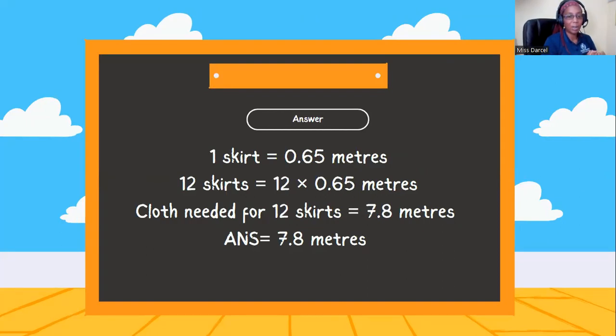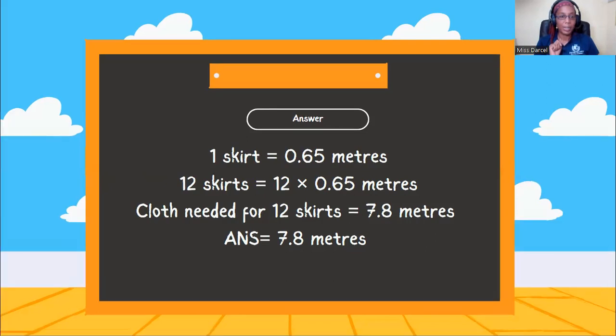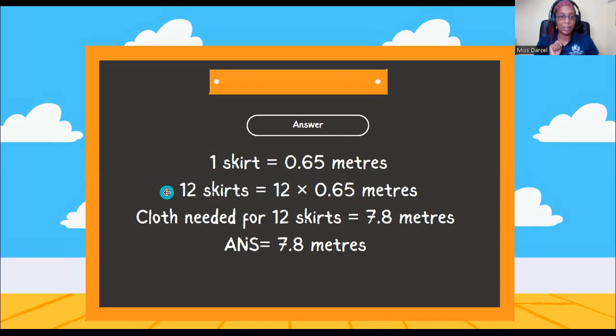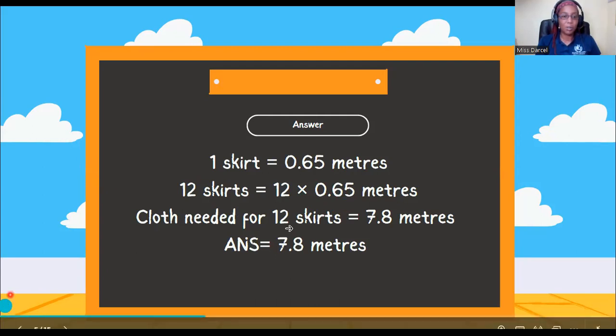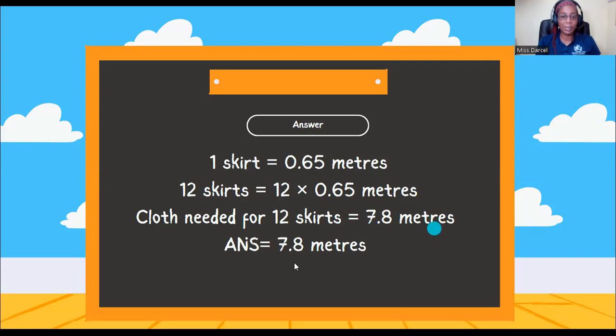All right, so let's look at the answer. Did you get what I got? So one skirt is 0.65 meters. 12 skirts would be 12 multiplied by 0.65 meters. Hopefully you remember how to do multiplication using decimals. All you do is simply place the decimal to the side, multiply it like a regular whole number, and then put back the decimal in the right place. So this is two decimal places, so you're going to place it, make sure your answer has two decimal places. Cloth needed for 12 skirts is 7.8 meters, right?